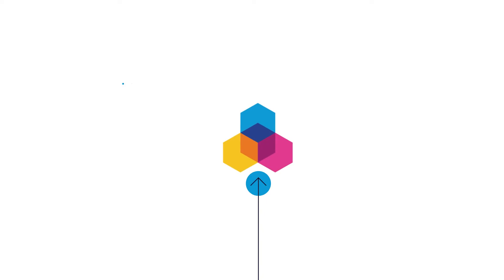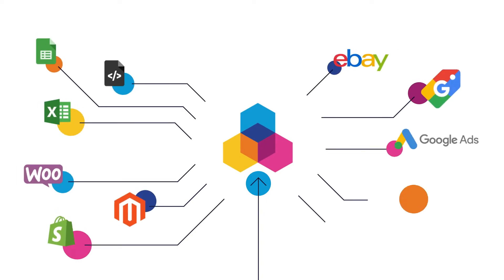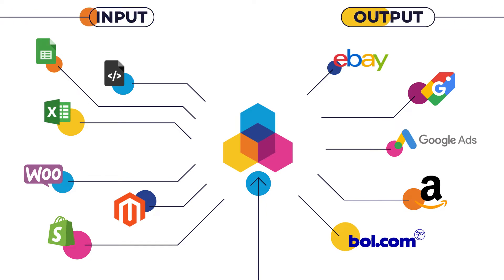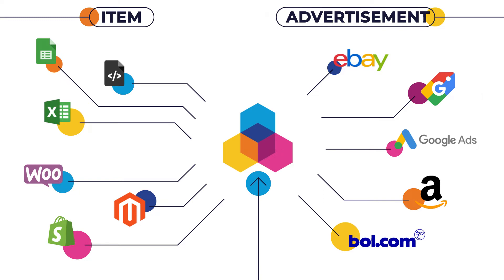In the world of e-commerce, Channable fulfills an intermediary role between web shops and several types of advertising channels. We have the input on the left and the output on the right. Generally, input is an item while output is an advertisement. But who actually uses Channable to make advertisements for these items? Well, the answer is pretty simple: anybody who wants to advertise anything, anywhere.